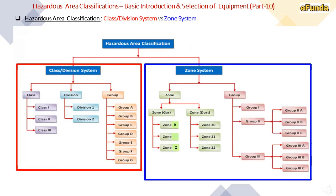The Class Division System versus Zone System: the class division system consists of Class 1, Class 2, Class 3; divisions are Division 1 and Division 2; and groups are Group A, B, C, D, E, F, G. The zone system has zones for gas — Zone 0, Zone 1, Zone 2 — and zones for dust — Zone 20, Zone 21, Zone 22. Groups are classified into Group 1, Group 2 and Group 3, with Group 2 further divided into 2A, 2B, 2C and Group 3 into 3A, 3B, 3C.